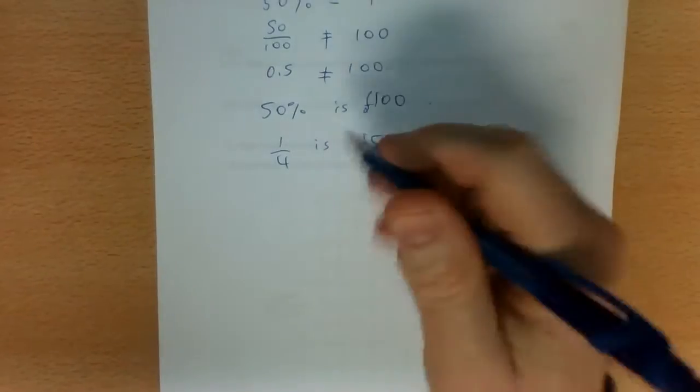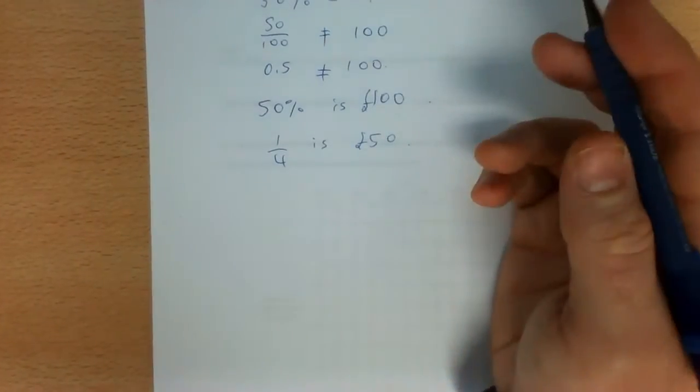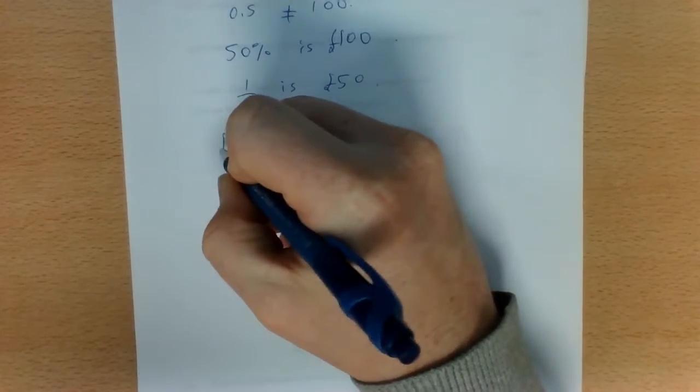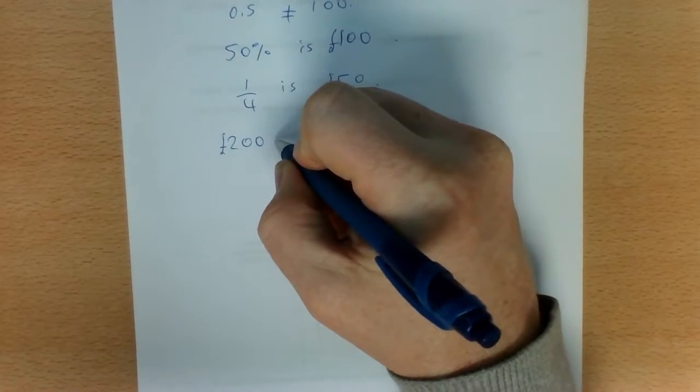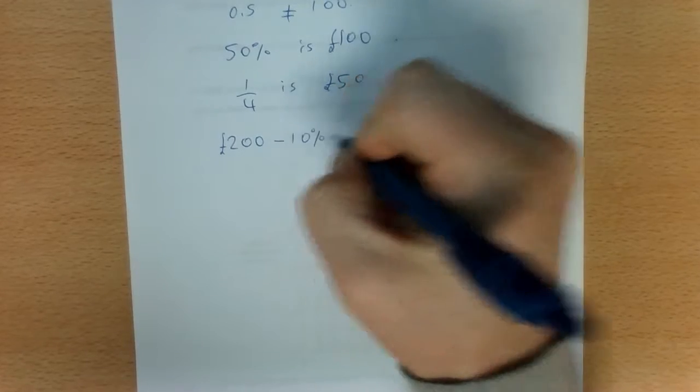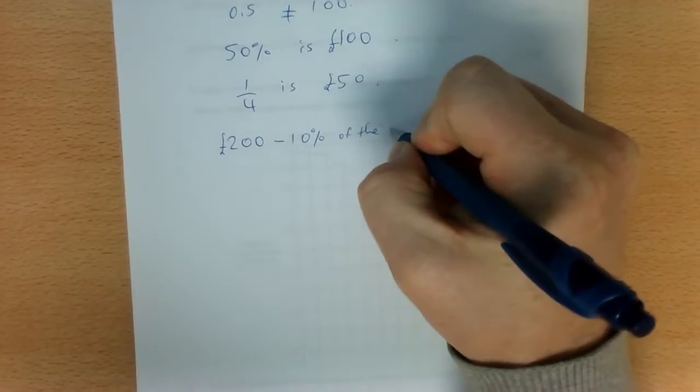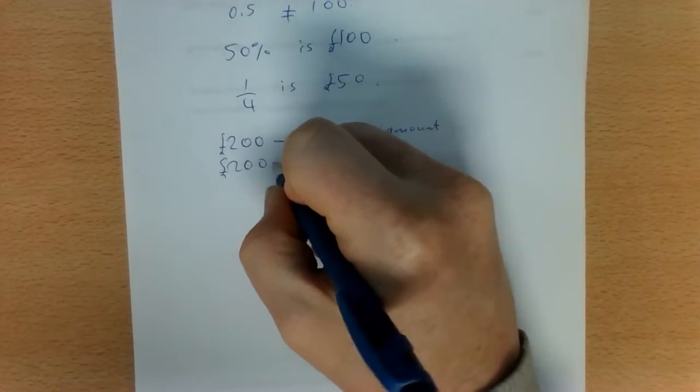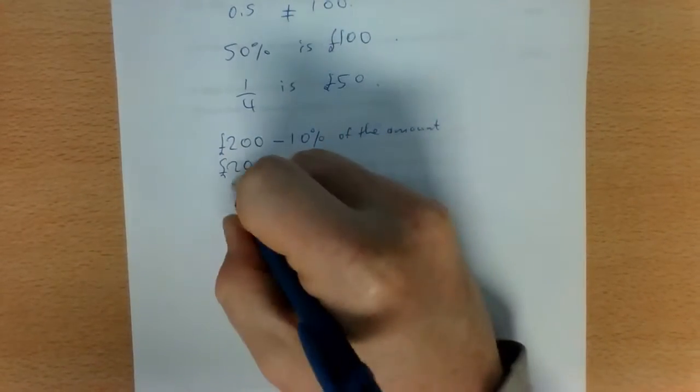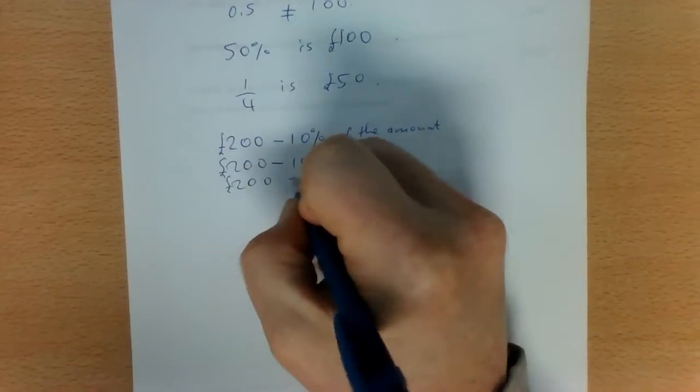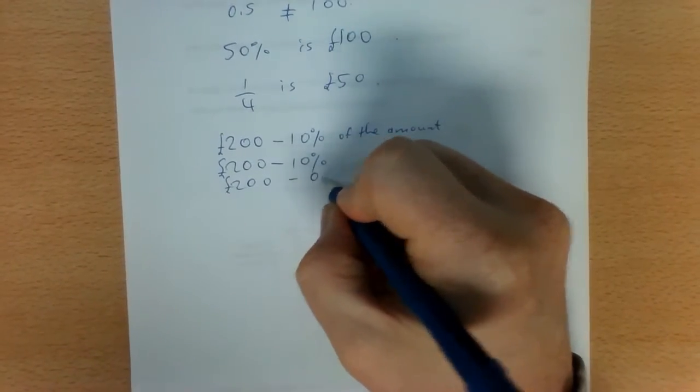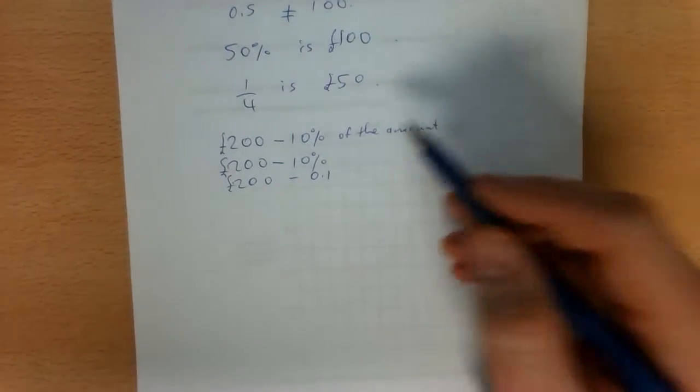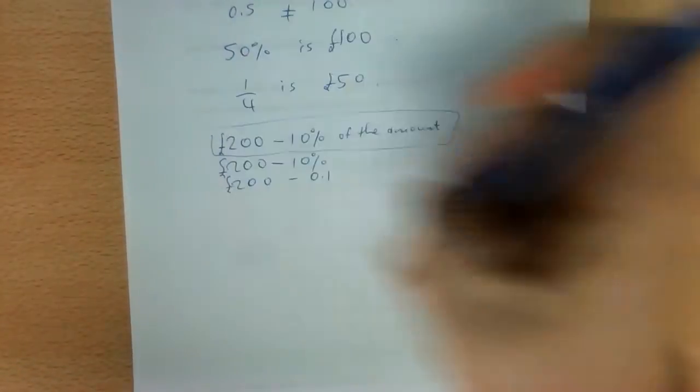And finally, let's say you had to reduce something by 10%. I would go 200 minus 10% of the amount. I would never write 200 pounds minus 10% because technically that is 200 pounds minus 10 over 100, which is 0.1. And 200 pounds minus 0.1 is definitely not what I have in mind when I write a sentence like that.